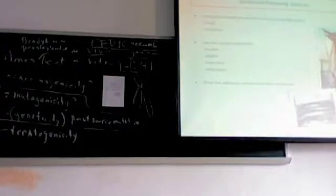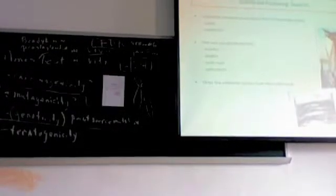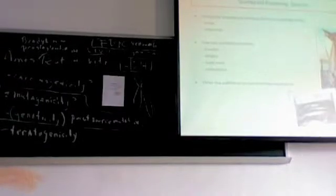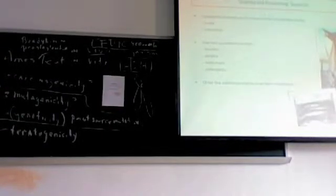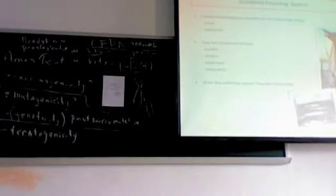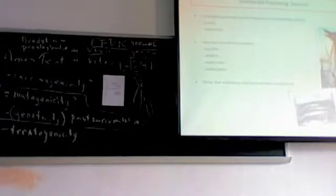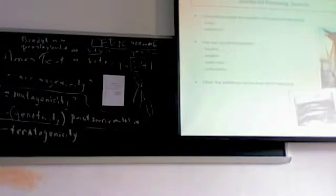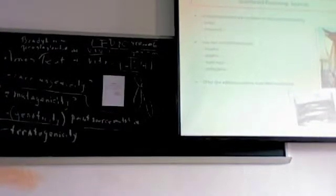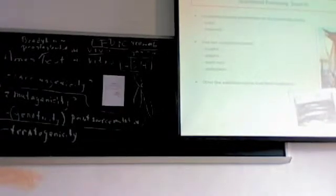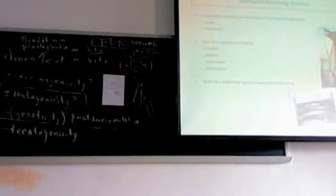The sources: the most common sources are members of the Scombridae family. The first ones are Scombridae, including tuna and mackerel.